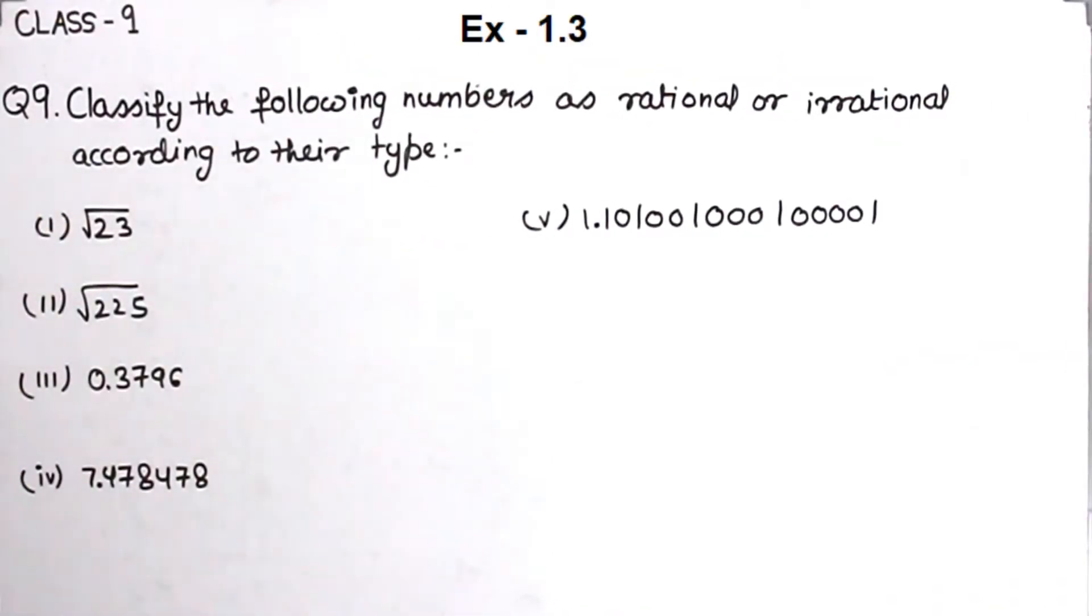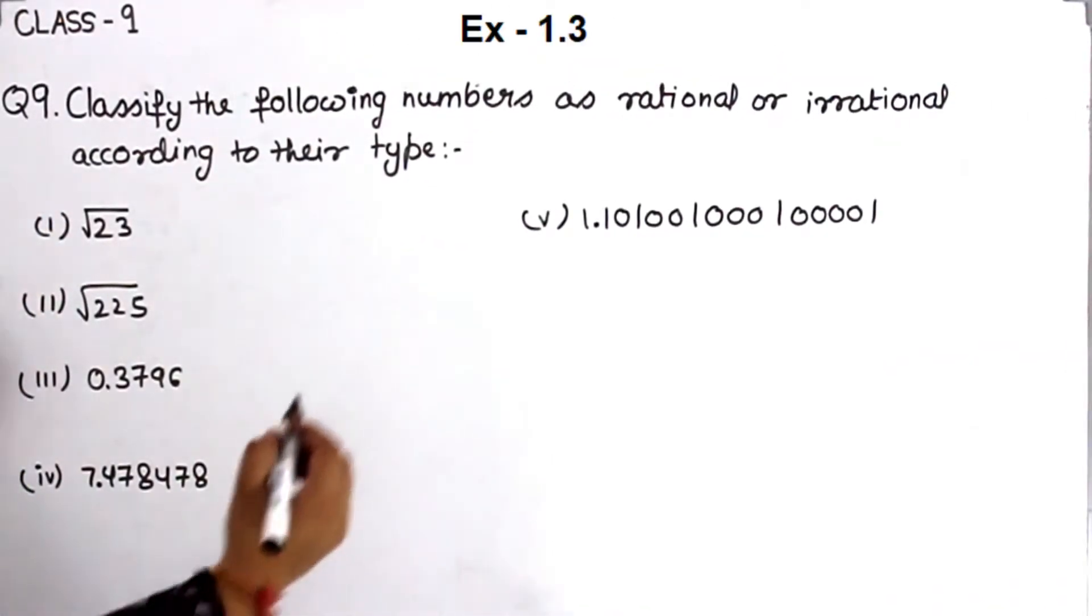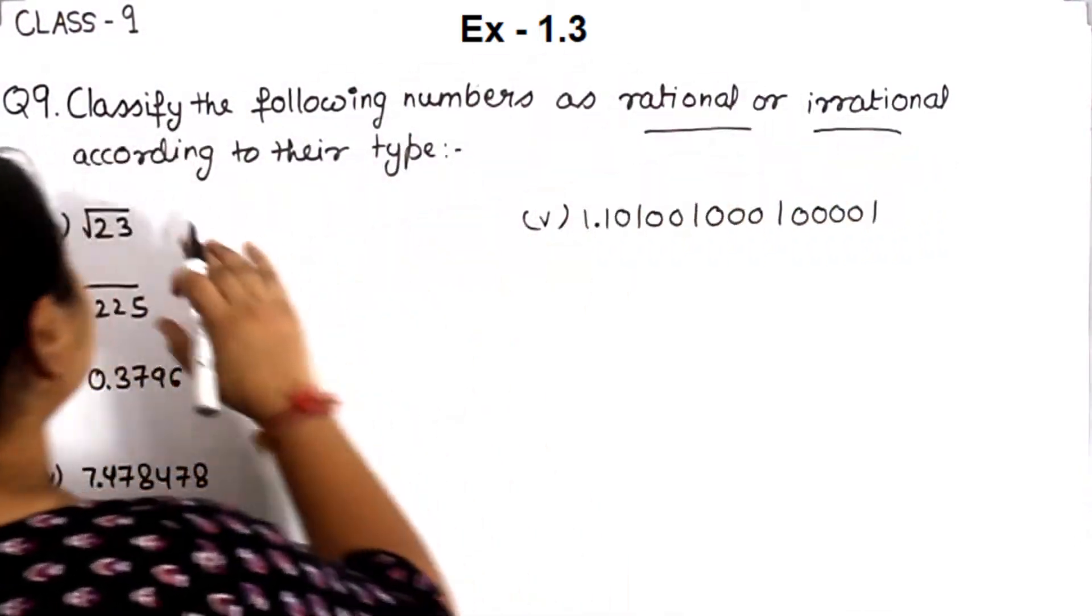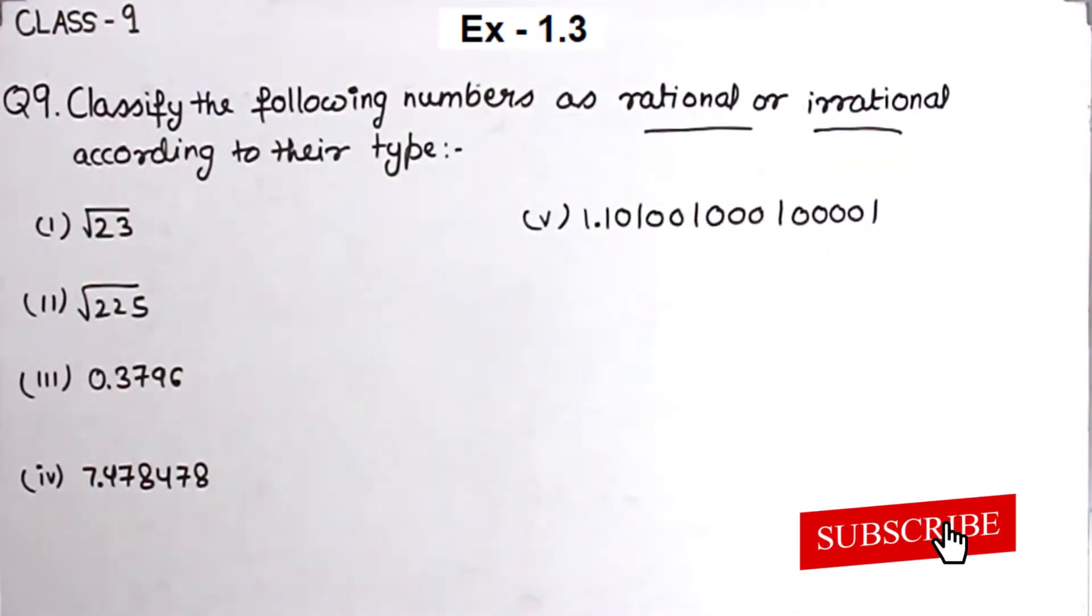Question number 9. Classify the following numbers as rational or irrational according to their type.